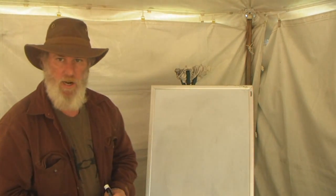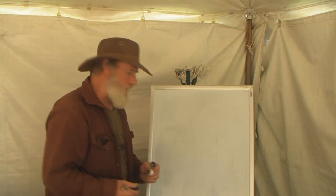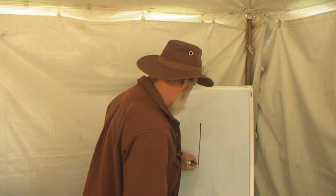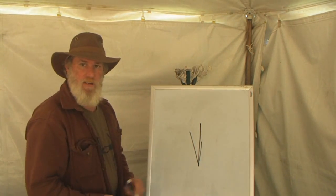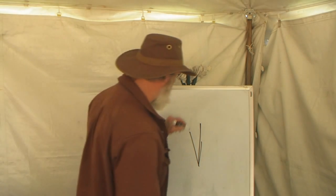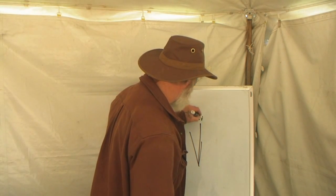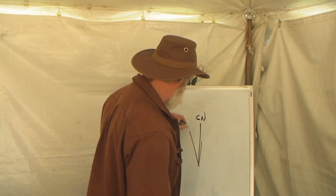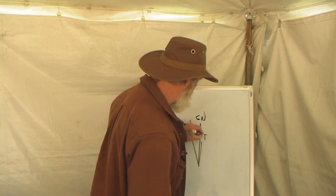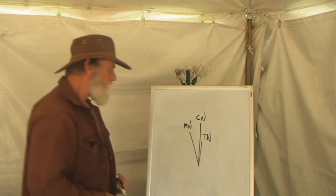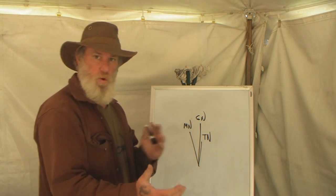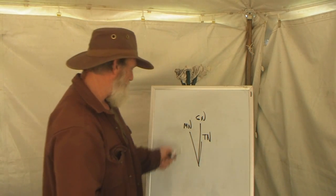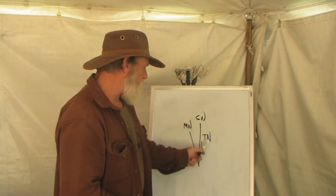If we look at the declination diagram of our map, it's basically going to look like this or something similar depending on where you're at in the United States or in the world. This would be grid north, this would be magnetic north, and you'll have an arrow pointing to true north. Those are the three different types of north: magnetic north, grid north, and true north.